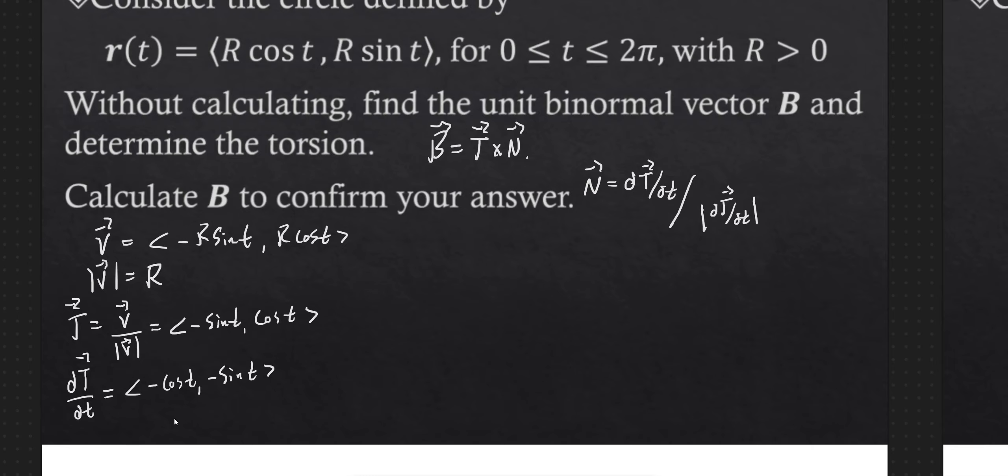Magnitude of that is 1. And so n, maybe I'll write that here, magnitude of dt/dt is 1. And so n, then, is just dt/dt. It's minus cos t, minus sin t.